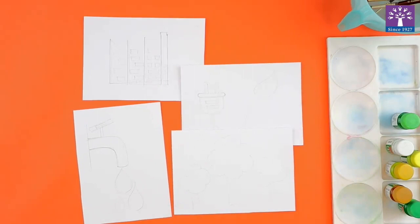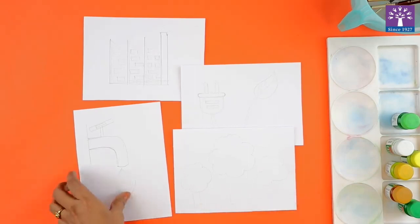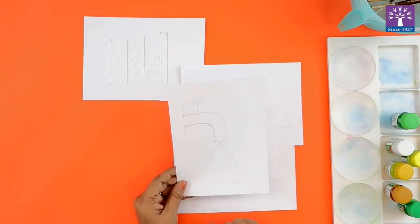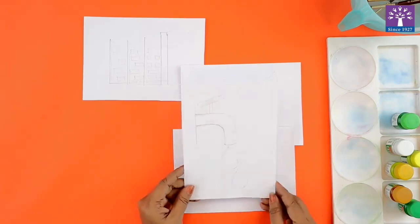Here I have drawn few trees which symbolize plant more trees or save trees. Here you can see that there is a tap with few drops of water, so this symbolizes save water.